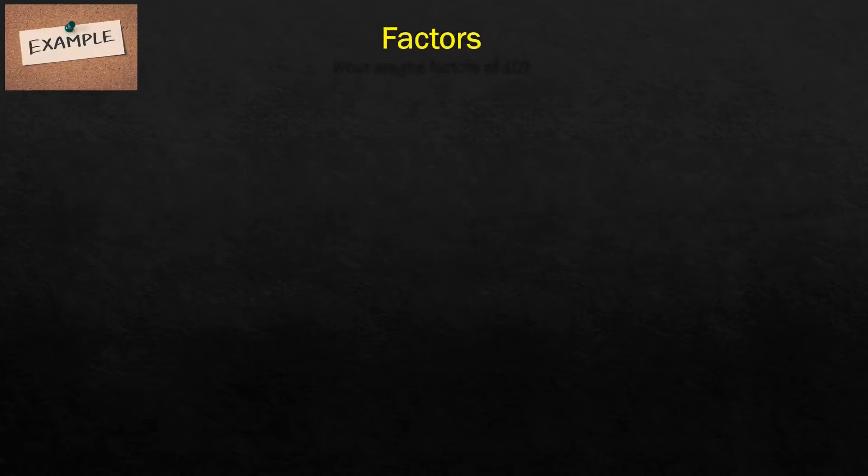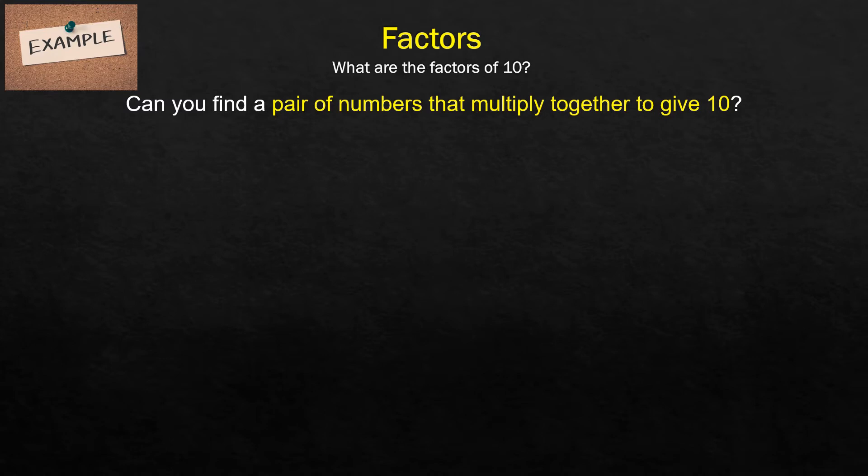Example. What are the factors of 10? Can you find a pair of numbers that multiply together to give 10? 5 and 2 are the numbers because 5 times 2 equals 10. So 5 and 2 are factors of 10.